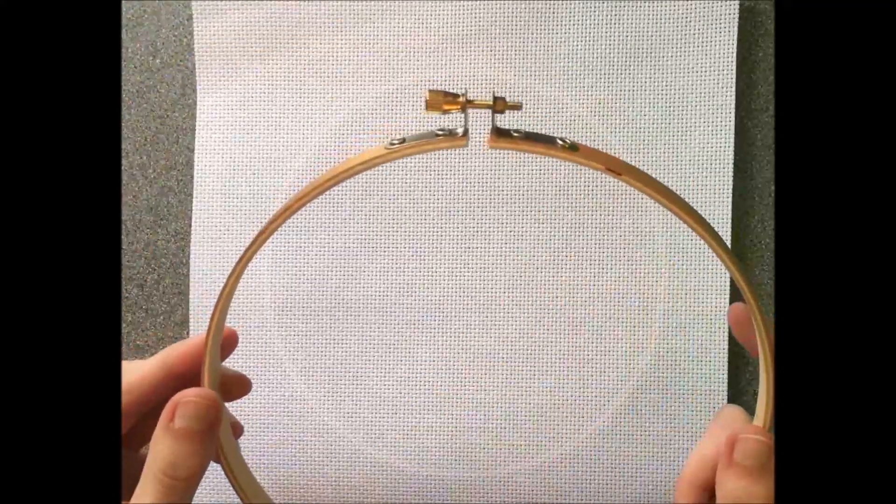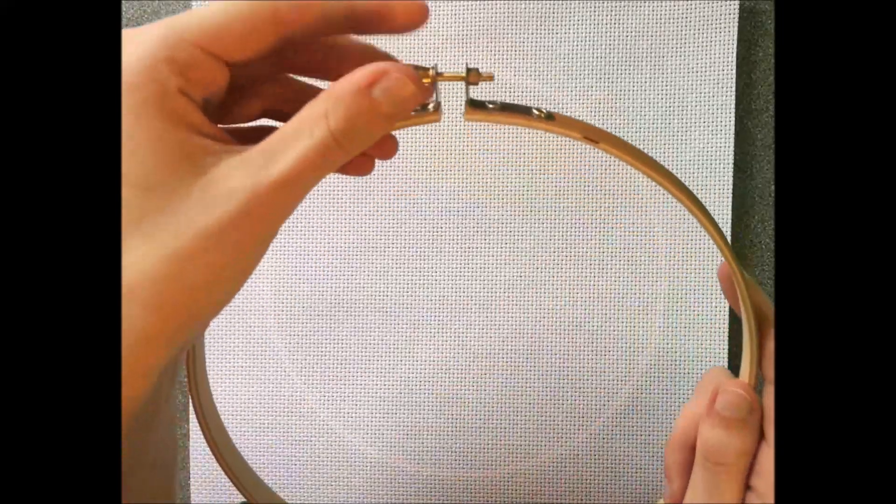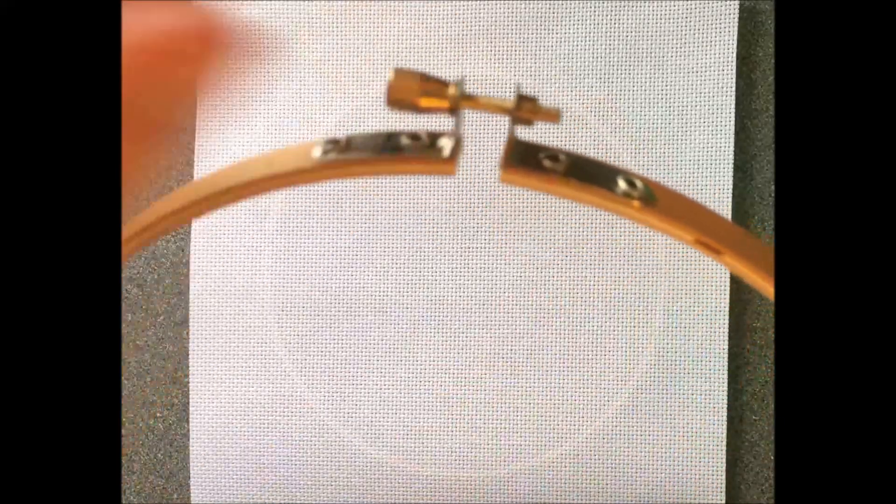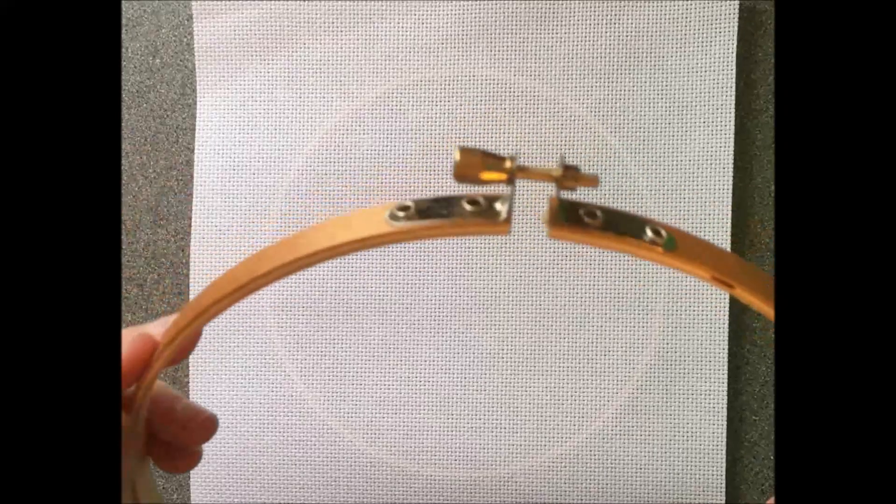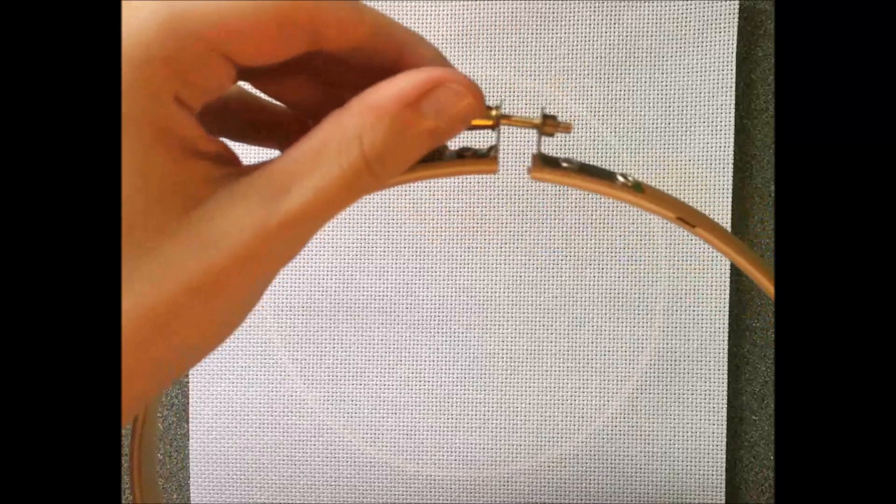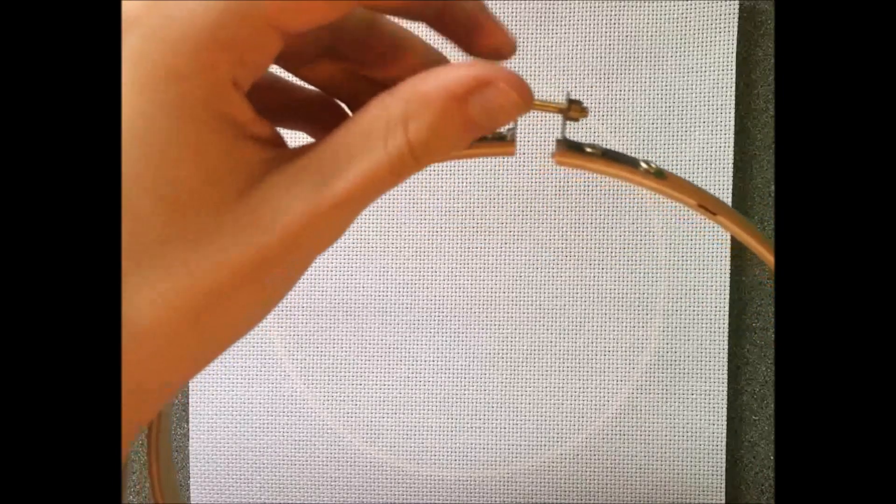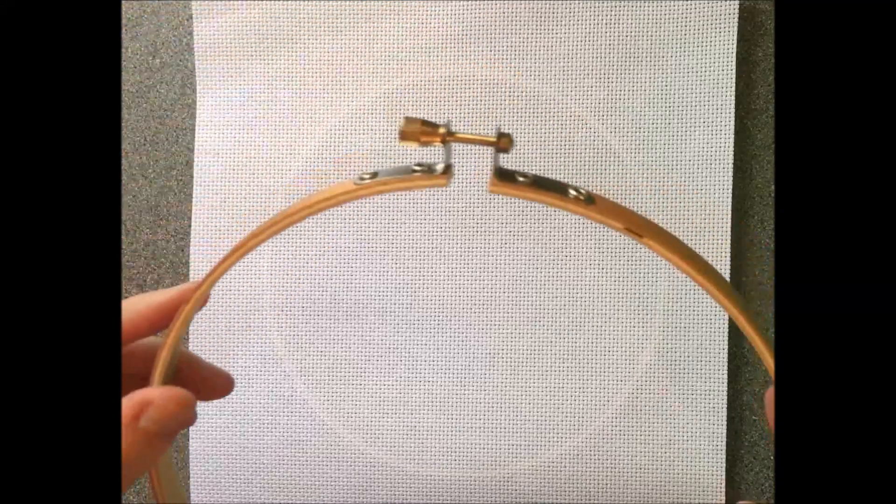Now you're going to take the outer hoop and I suggest unscrewing this. Let's see if I can focus. I don't know if that's focused or not, but unscrew it so that it becomes looser. This will make it easier to get the hoop on.